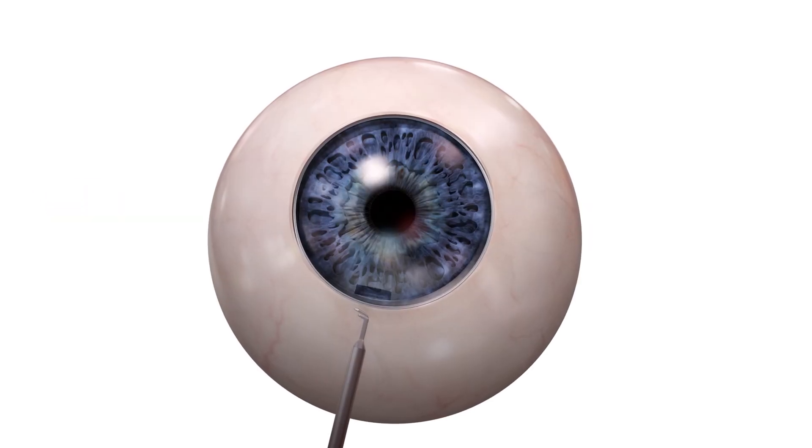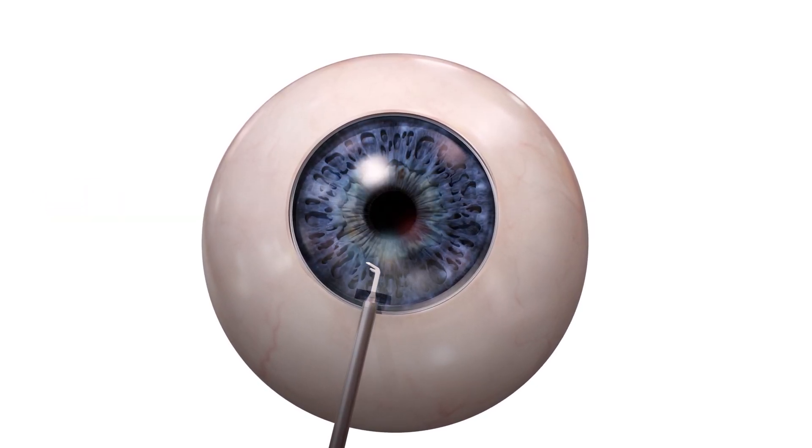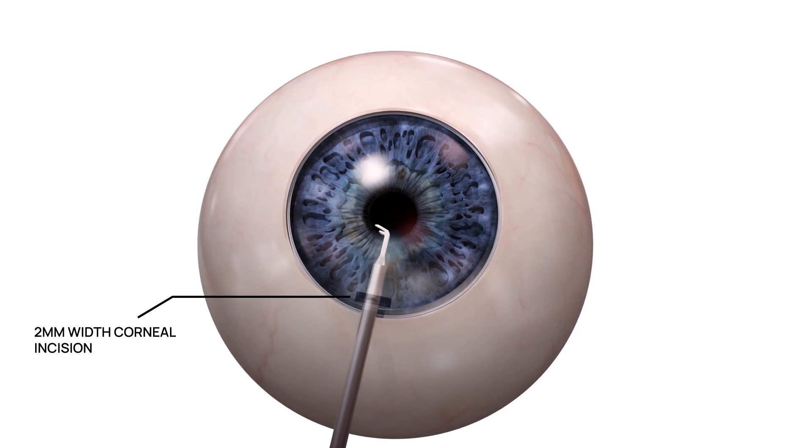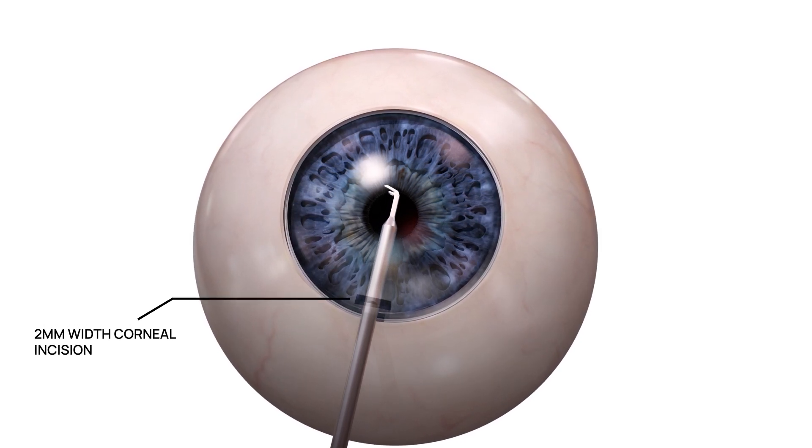To begin the procedure, Scion is inserted into the eye through a pre-existing clear corneal incision of at least 2 mm width.